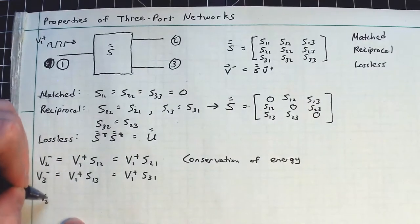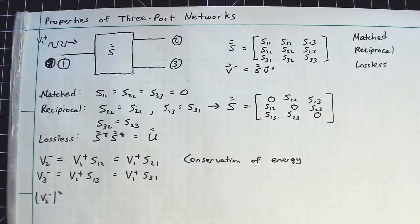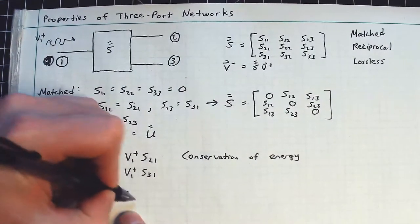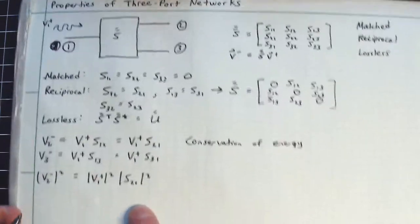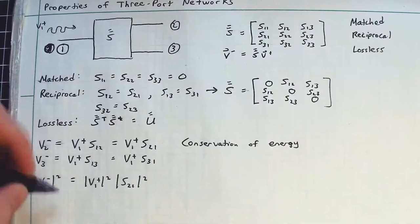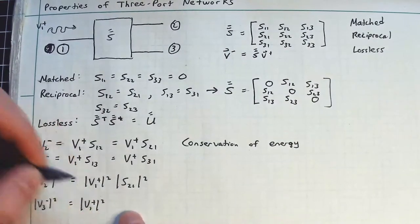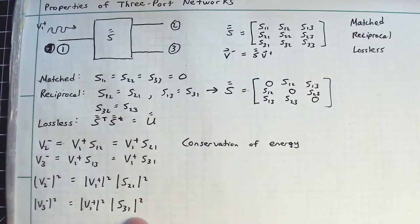So if I'm going to calculate the power of these signals here, I will find that |V2-|^2, that's the power in that signal, is going to equal the magnitude of |V1|^2 times the magnitude of |S21|^2. And then we'll also have the condition that |V3-|^2 is equal to |V1|^2 times |S31|^2, or S13.